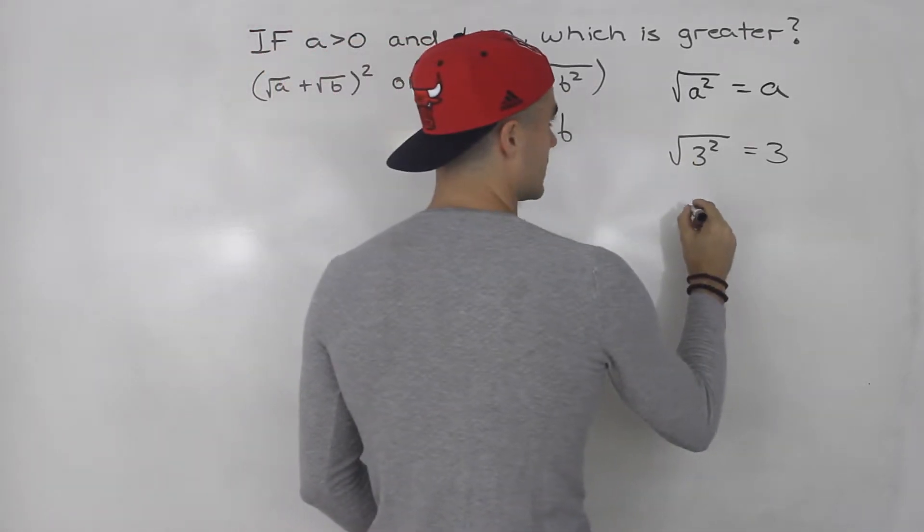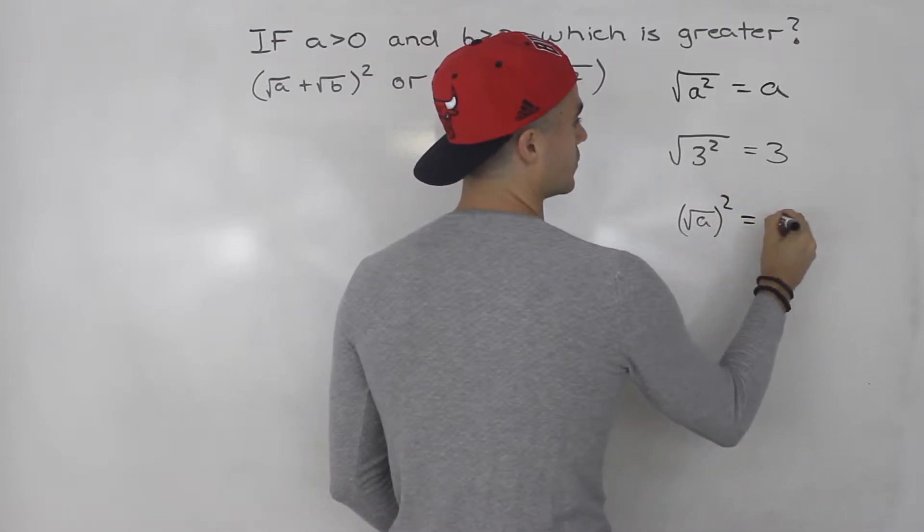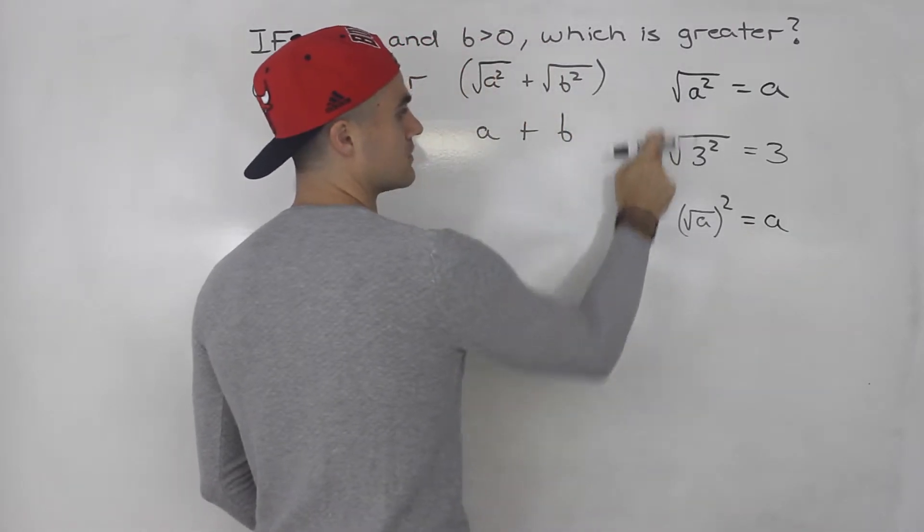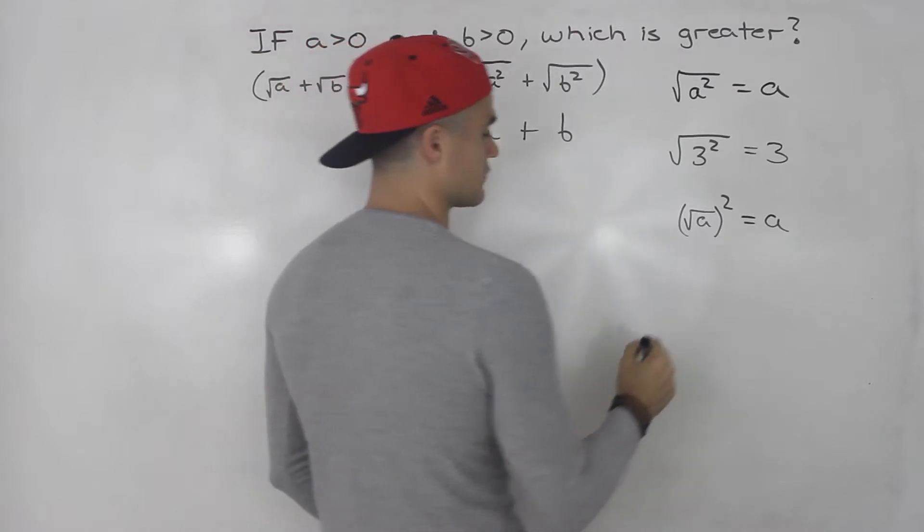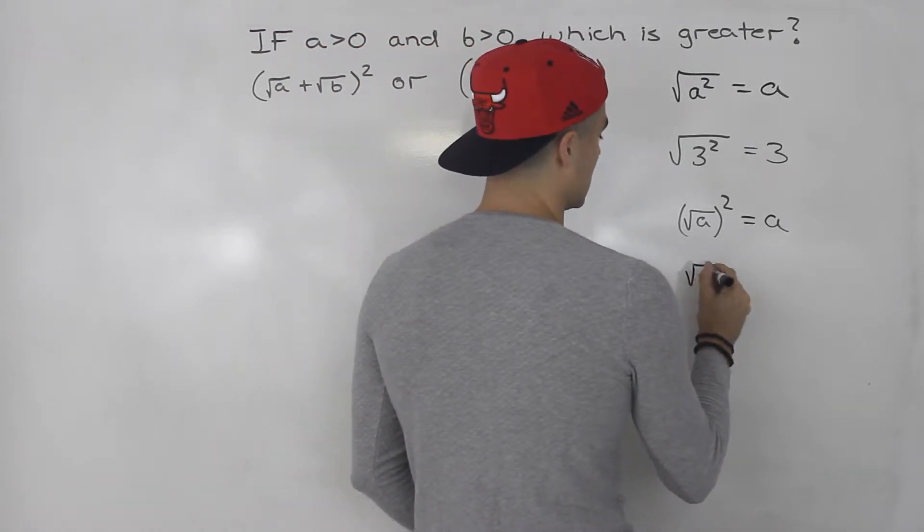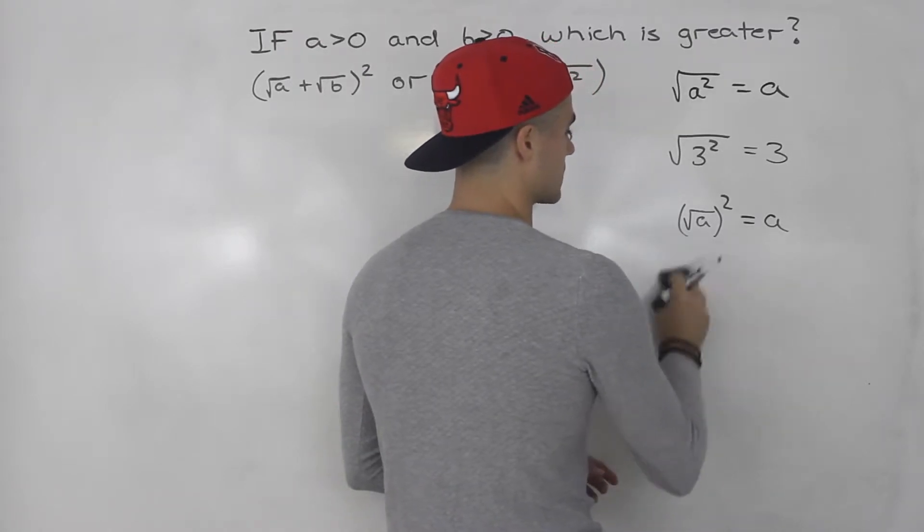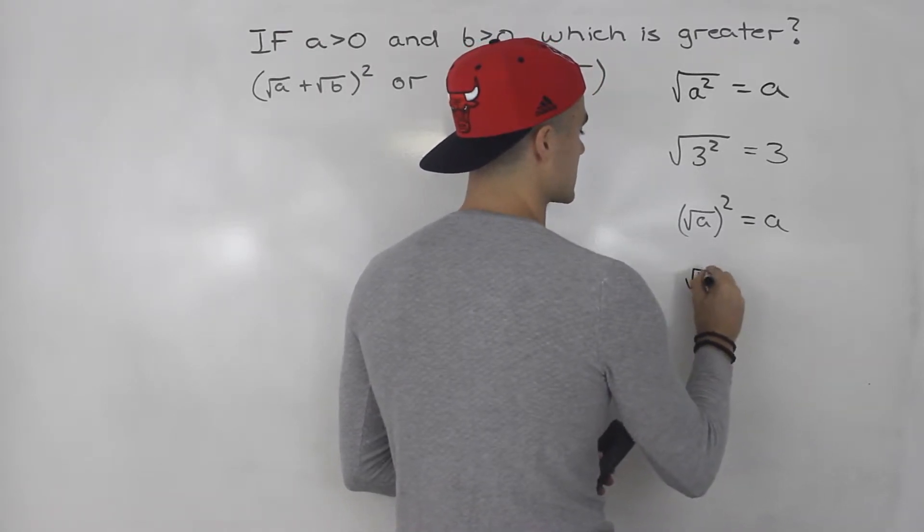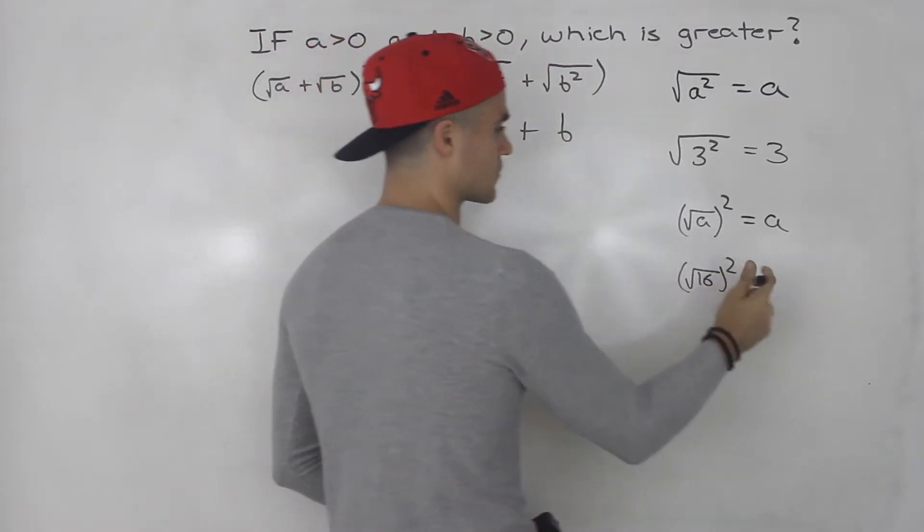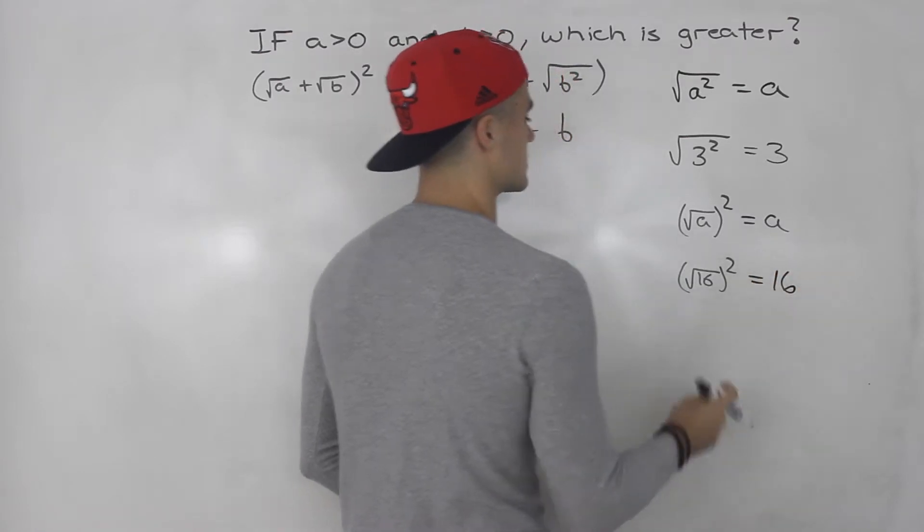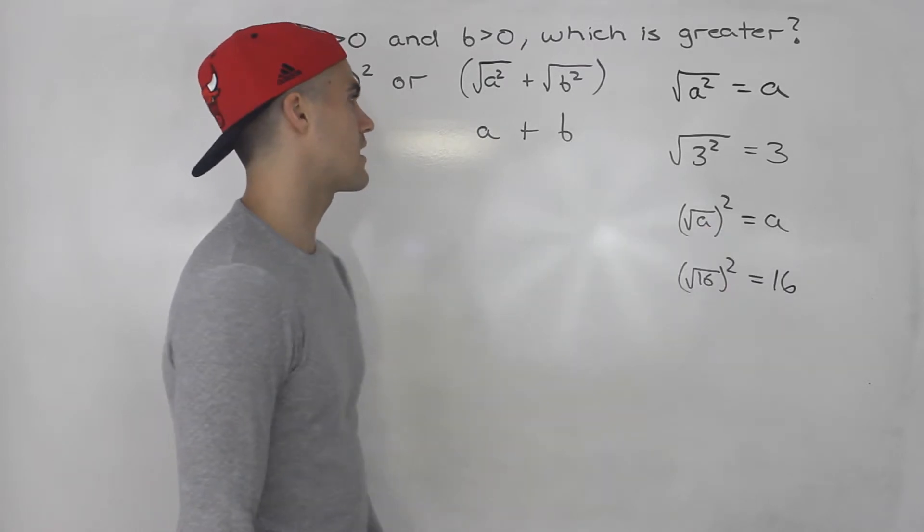Another rule here is if you had maybe the square root of a squared, that would be a as well. So both of these equal a, and an example of this with numbers is the square root of 16 squared. Square root of 16 is 4 and then 4 squared gives you 16. It's that same number in there. So that's equal to a as well.